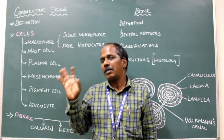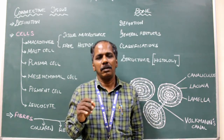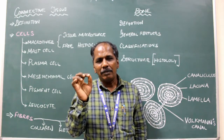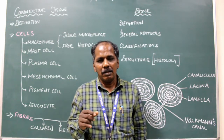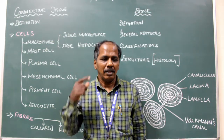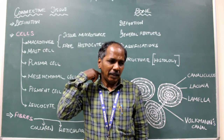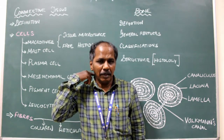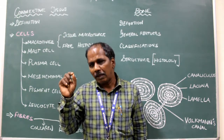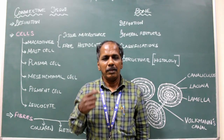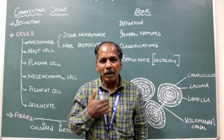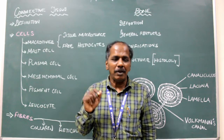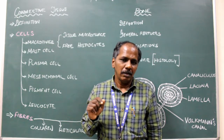Number two: the vertebral column. There are 33 vertebrae. The cervical vertebrae — cervical means neck — there are seven cervical vertebrae. Thoracic: there are 12 thoracic vertebrae. Lumbar: there are five lumbar vertebrae.